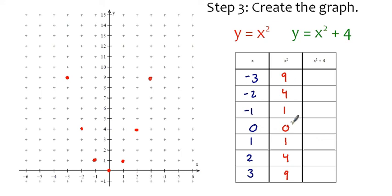0² + 4, 1² + 4, 2² + 4, and 3² + 4. (-1)² + 4, (-2)² + 4, (-3)² + 4. Okay.